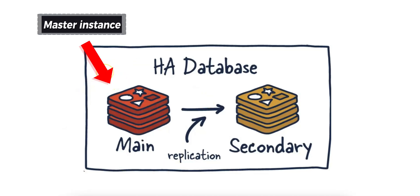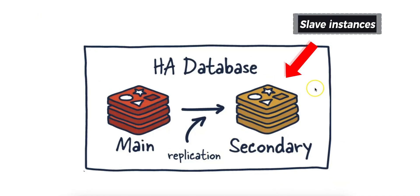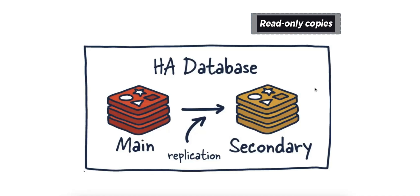The master instance is the main Redis instance that handles all write operations. It stores the primary copy of the data. These slave instances are one or more secondary Redis instances that replicate the master's data. These are read-only copies of the database and can be used to offload read operations from the master.